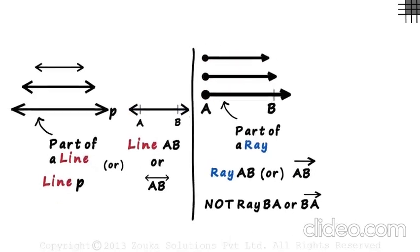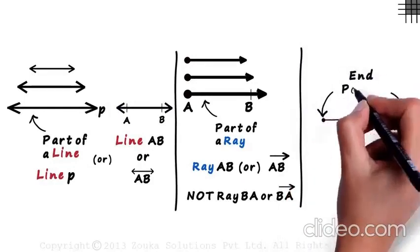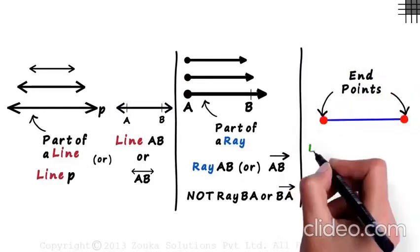Now, let's get to the final concept in this video. Look at what we have drawn here. We can see that it has two endpoints. This is called a line segment and it is a fixed part of a line. This is its specified length and it does not extend indefinitely in any direction.